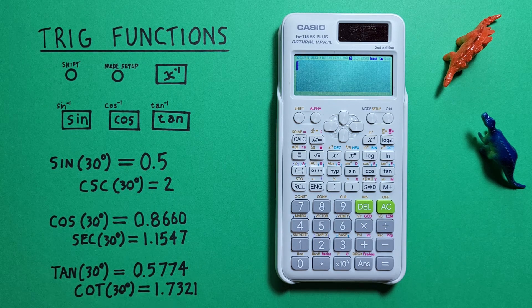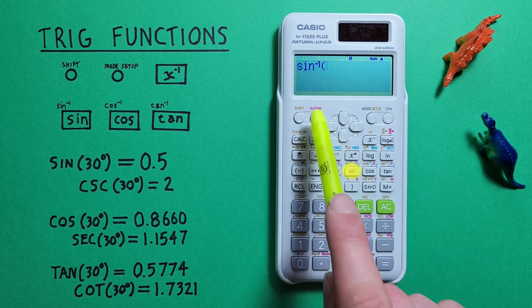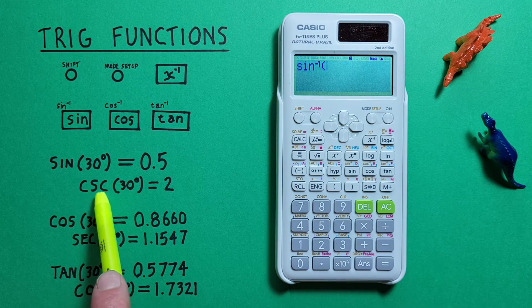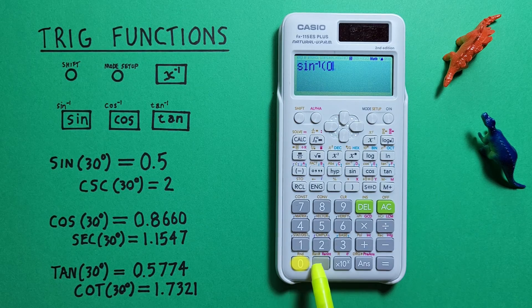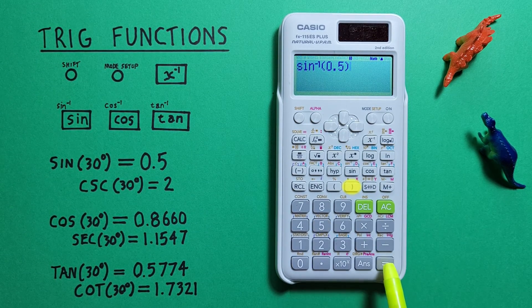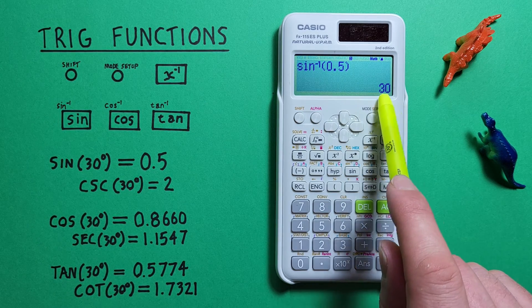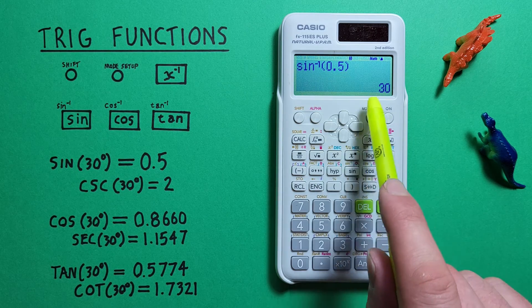And there we see a sine to the negative 1, which is different than the cosecant, keep in mind, and then enter our 0.5, close our bracket, and press equals, and see we get a result of 30 degrees. So the arc sine of 0.5 is equal to 30.